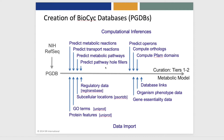We also create database links to a variety of external databases, and we include organism phenotype data and gene essentiality data. All BioPsych databases contain these computational inferences and some imported data, depending on which data are available for a given genome. That gives us a basic tier 3 database, as we call it.